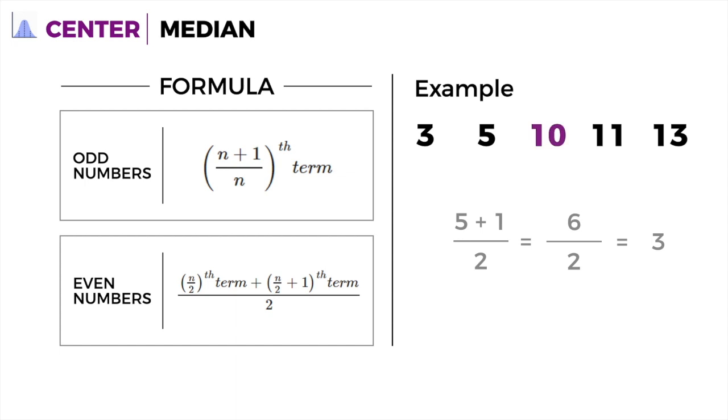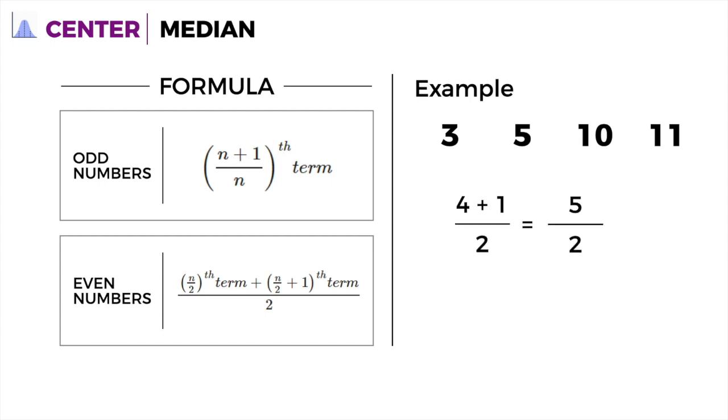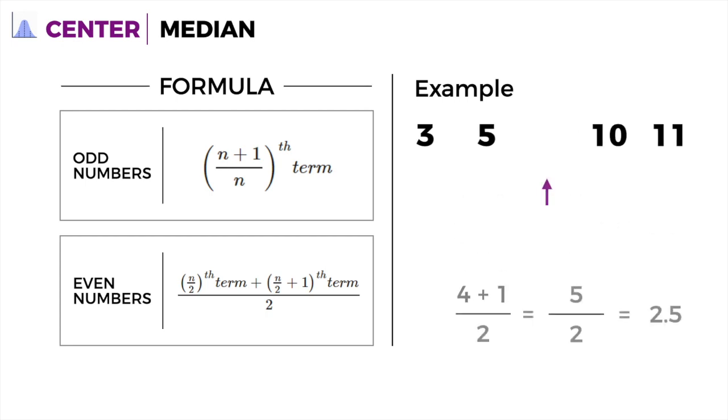But let's say we only have 4 values and we don't have the 13 there. We still apply the same formula but with added steps. That's 4 plus 1 over 2, 5 over 2, and ultimately an answer of 2.5. This is the 2.5th position in the data set, in the middle of 5 and 10.